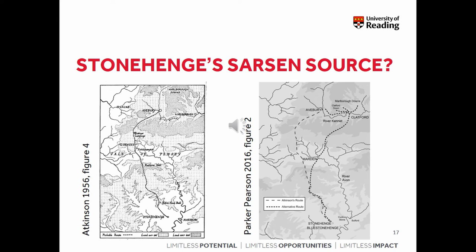In 1956, Professor Atkinson suggested the transportation route sketched on the map on the left, and 60 years later, Professor Parker Pearson suggested this slightly different route drawn on the right. But we know from the general distribution map that sarsen is available over a much wider area of southeast England. Could Stonehenge's sarsen stones have come from further away? After all, other stone types have been moved considerable distances to Stonehenge in prehistory, like the South Wales bluestones. The problem is both theoretical and methodological. Archaeologists have tended to take a practical and common sense view — those huge sarsen stones must have come from a nearby, local source.